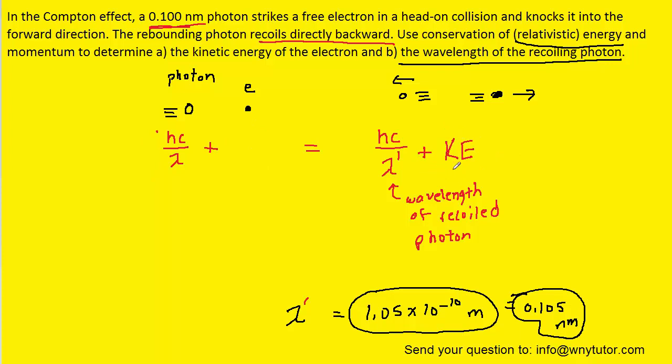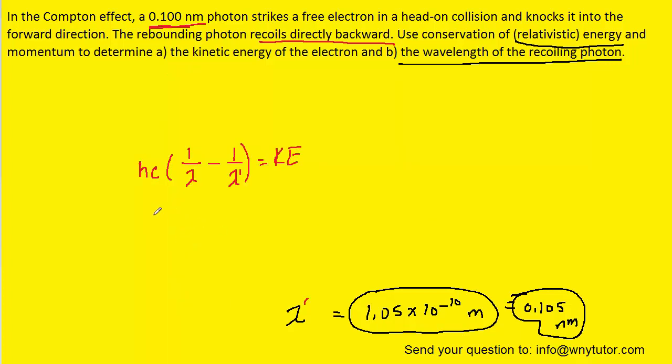So the energy equation simplifies to the following. Now, of course, we're trying to solve for the kinetic energy. So we're going to subtract this term over to the left-hand side. And so we're left with this result. We could actually factor out an hc for simplicity. So we'll have one over the original wavelength of the photon minus one over the wavelength of the recoiling photon. And that's going to equal the kinetic energy. And so now we're ready to just plug in the known values.